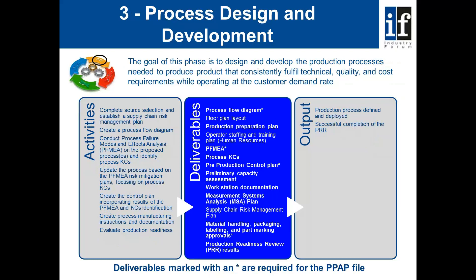When we move to process design and development, we can again start to see PPAP elements. We have the process flow diagram, the process FMEA, plans for measurement system analysis, material handling, packaging, labelling and part marking approvals, and something known as the production readiness review. The items marked with an asterisk become deliverables into the PPAP file.